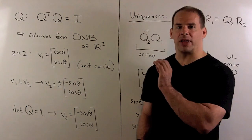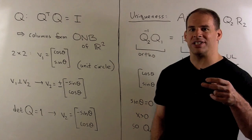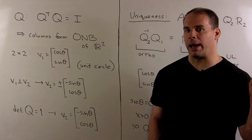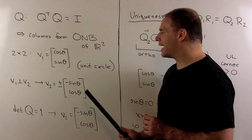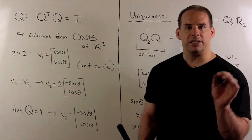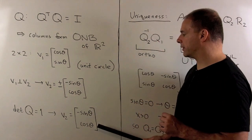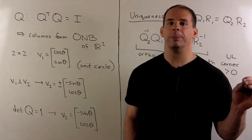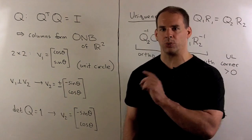If we want a vector orthogonal to V1, we can switch the entries and negate the first one, giving a second choice by multiplying that vector by minus 1. So V2 equals plus or minus (minus sine theta, cosine theta). To get the determinant equal to 1, we let V2 equal minus sine theta, cosine theta. Putting V1 and V2 as columns of Q and taking the determinant, we get cosine squared plus sine squared, which equals 1, as we hoped.